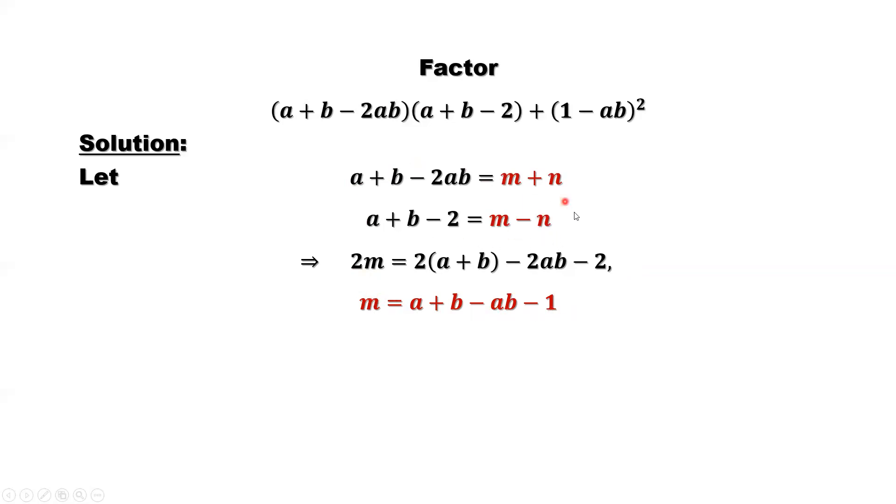Use this formula again. We want to find n. So first equation minus the second equation. m disappear. n minus minus n will be 2n. Left hand side, a plus b minus a plus b cancel. Negative 2ab is here. Minus minus 2 is plus 2. Get rid of 2, we have n equals 1 minus ab.